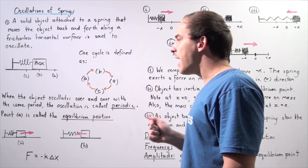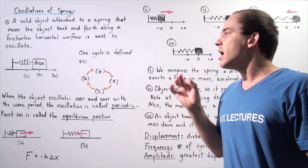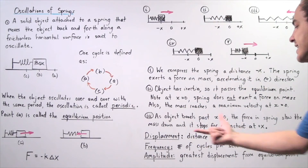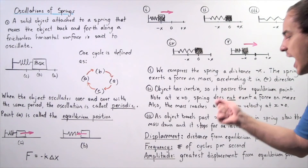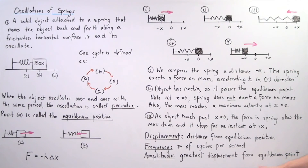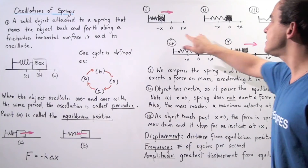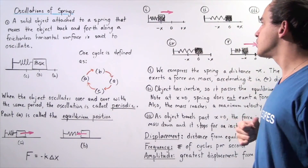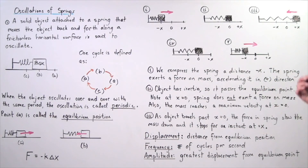The amplitude of our oscillation is simply the maximum or greatest displacement from the equilibrium position. In this case, our amplitude is x — it's x in one direction and x in the opposite direction. So if x were five meters, our amplitude would be five meters.